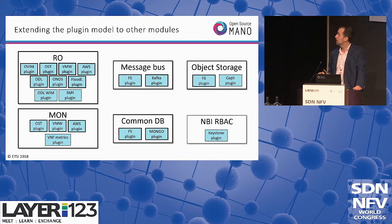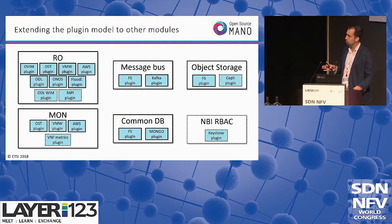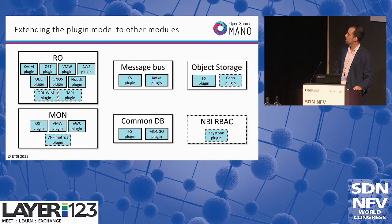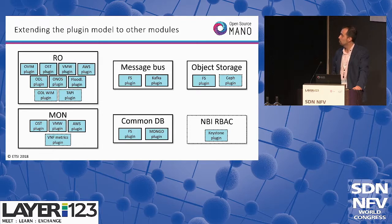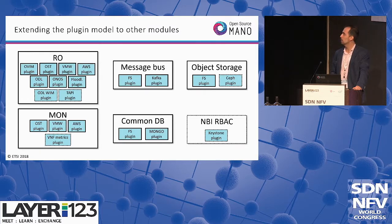We are not only keeping the plugin model that we had, but also extending it. The RO is the resource orchestrator responsible for deploying VMs and networks. It can rely on different VIM plugins such as OpenStack, VMware, and AWS. It also has plugins for SDN controllers for creating underlay connectivity between VMs — we currently support ODL, ONOS, and Floodlight plugins. We are now working on WIM plugins, particularly a TAPI plugin and an ODL-based plugin for testing WIM management from the RO.